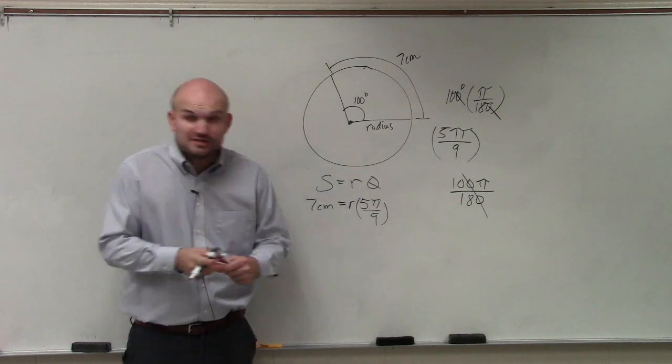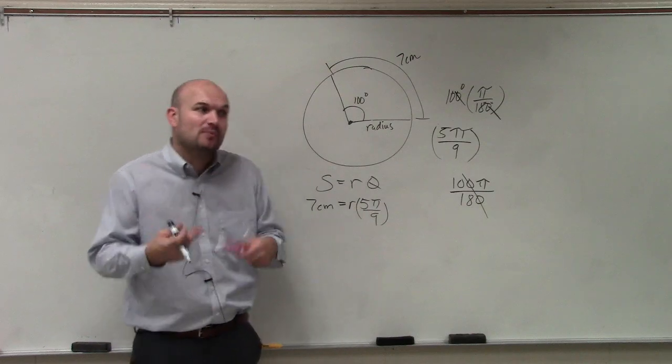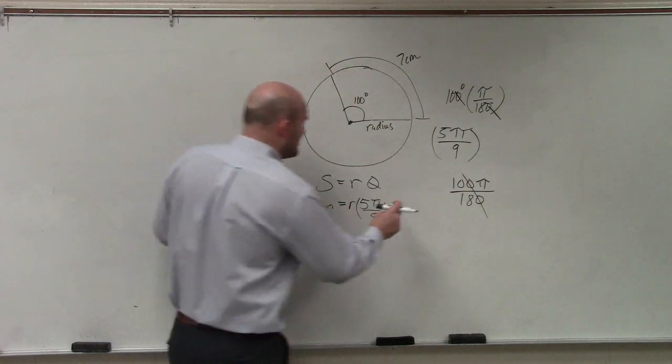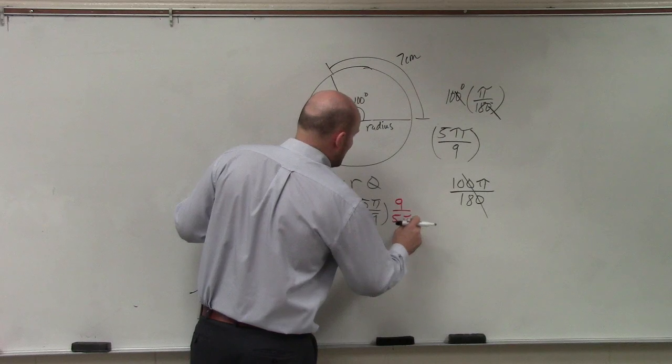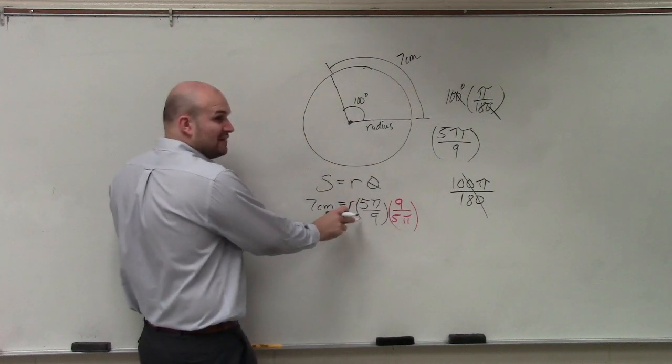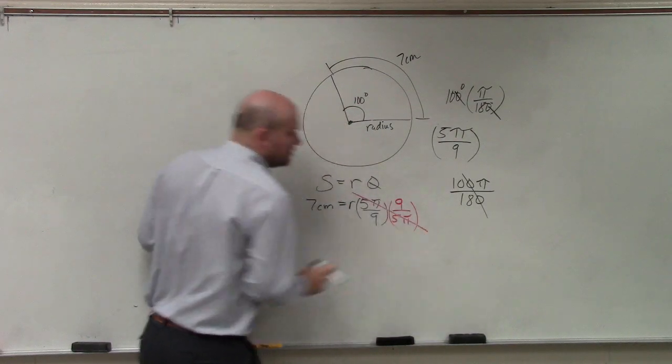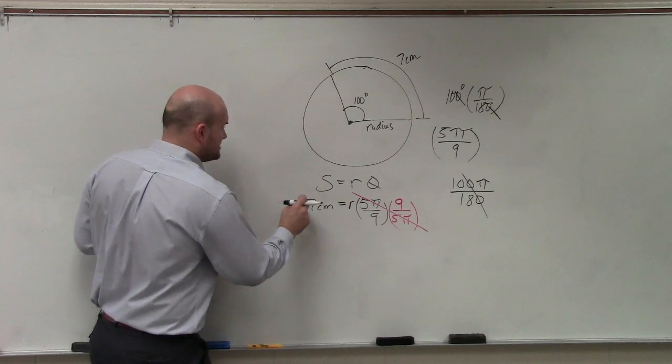But we really don't like dividing fractions. Instead of dividing fractions, we prefer to multiply by the reciprocal. So I'm going to multiply by 9 over 5 pi. Because any fraction multiplied by the reciprocal multiplies to 1. Then I do the same thing over here.